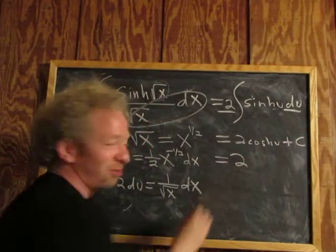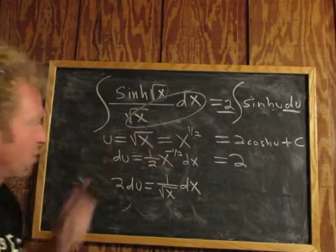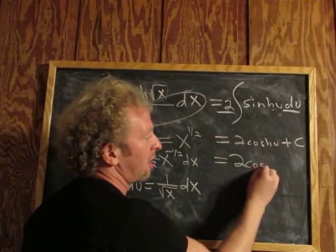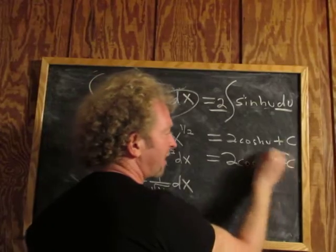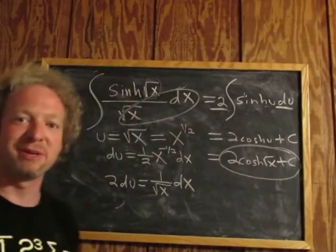Something so easy it hurts. 2 and then u is the square root of x. This is cosh of the square root of x plus c. Kind of a cool problem. I hope that makes sense.